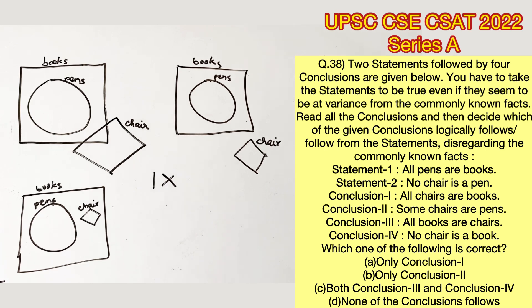Conclusion 2 says some chairs are pens. This also does not follow in all three cases.